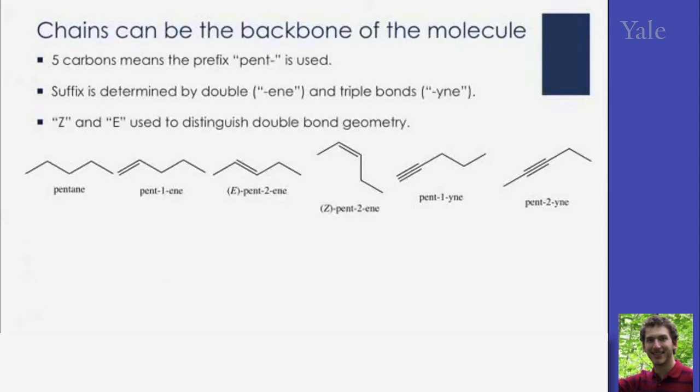Now these carbon chains are the backbone of the molecule. Here we're looking at a five carbon chain, so we're using the prefix pent. The suffix is determined by the number of double bonds or triple bonds in the molecule. For instance, all the way on the left, pentane, we use the suffix "-ane" to mean that there are no double bonds.